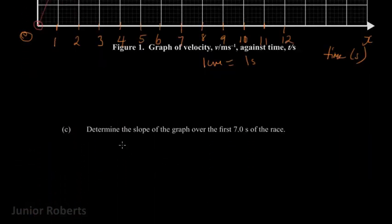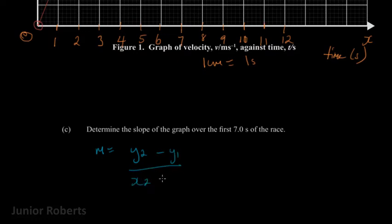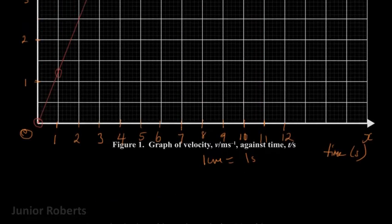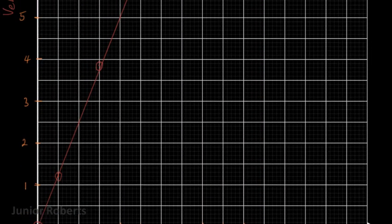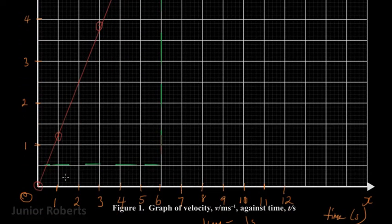The question says: determine the slope of the graph over the first seven seconds of the race. To find the gradient — slope — we use m equals (y2 minus y1) divided by (x2 minus x1). We draw a large triangle on the graph to help us determine the coordinates needed to calculate the gradient of the line during the first seven seconds.